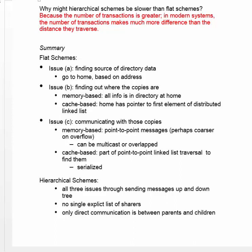In summary, there are three issues that both flat and hierarchical schemes need to face. The first is finding the source of directory data — easy in a flat scheme because you go to the home node, which is identified by the leading bits of the address. The second is finding where the copies are: in a memory-based directory, all the information is right there — whether a bit vector or linked list — in the same place in memory. In a cache-based scheme, the home has a pointer to the first element of a linked list through the caches sharing it, and you traverse from cache to cache to locate all sharers.